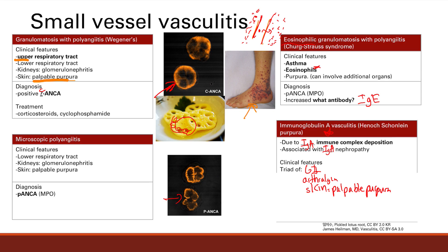That's it for vasculitis. To compare and contrast the small vessel diseases: microscopic polyangiitis is the same as Wegener's except no upper tract symptoms, and it's P-ANCA. Churg-Strauss differentiates with asthma, eosinophils, and elevated IgE. Henoch-Schönlein purpura has that triad of symptoms and is associated with IgA.